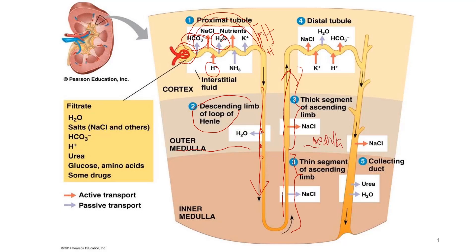In the thick segment of the ascending limb, the movement of sodium chloride out of the filtrate continues. Here, however, the epithelium actively transports sodium chloride into the interstitial fluid. As a result of losing salt but not water, the filtrate becomes progressively more dilute as it moves up toward the cortex in the ascending limb of the loop.